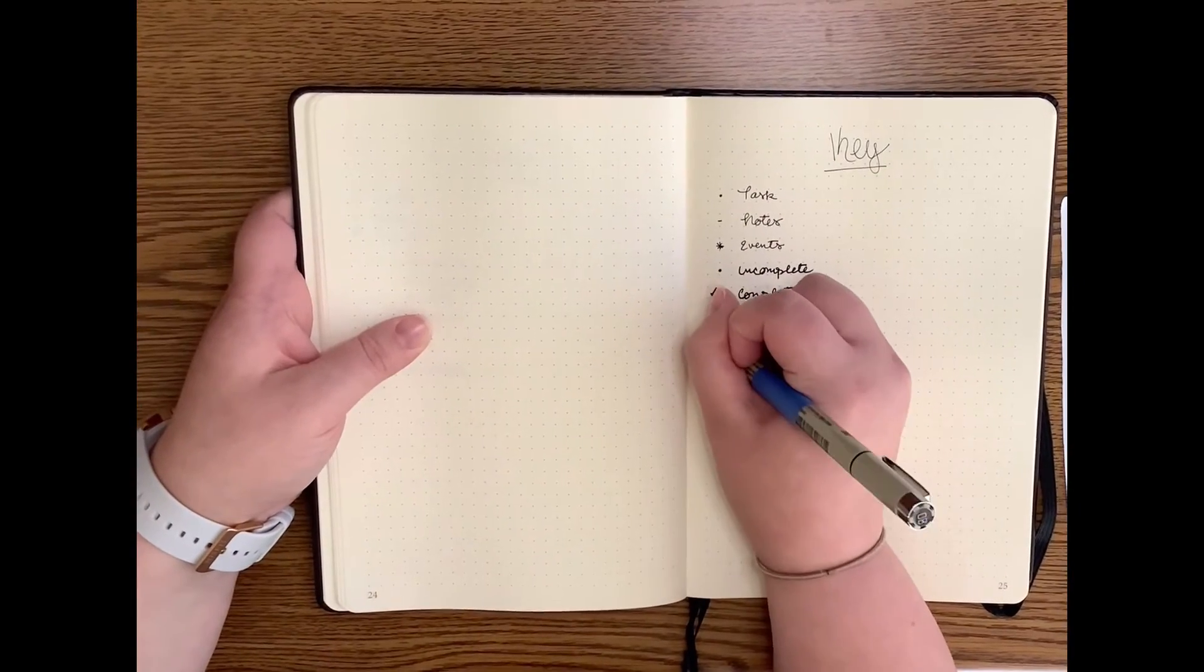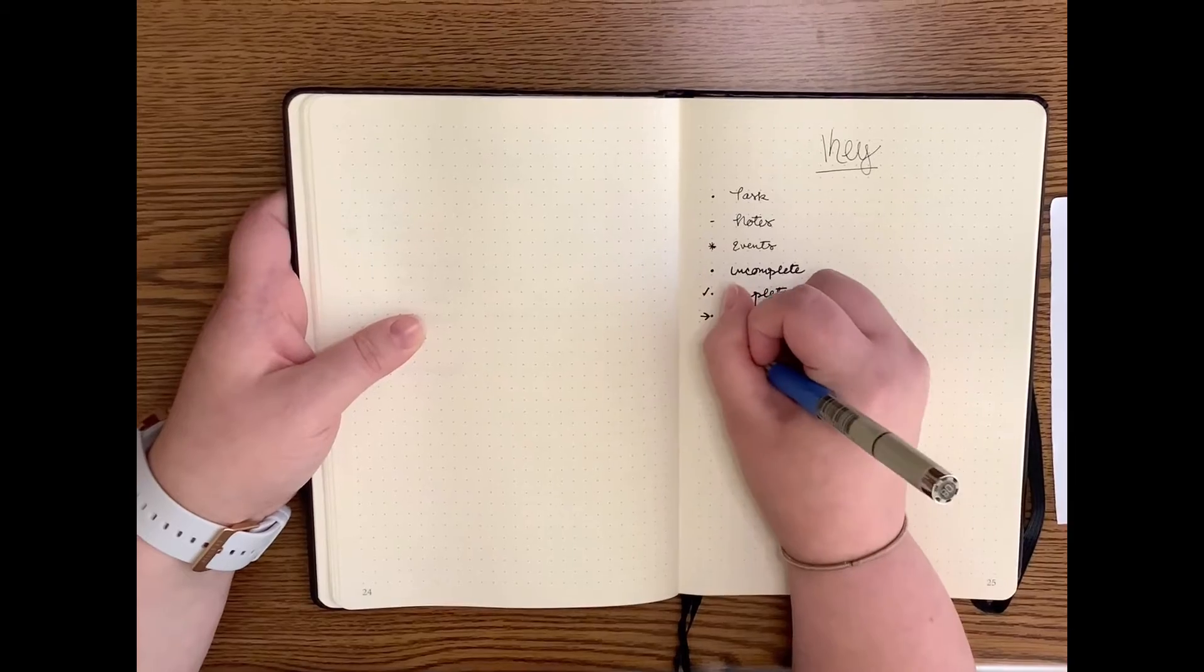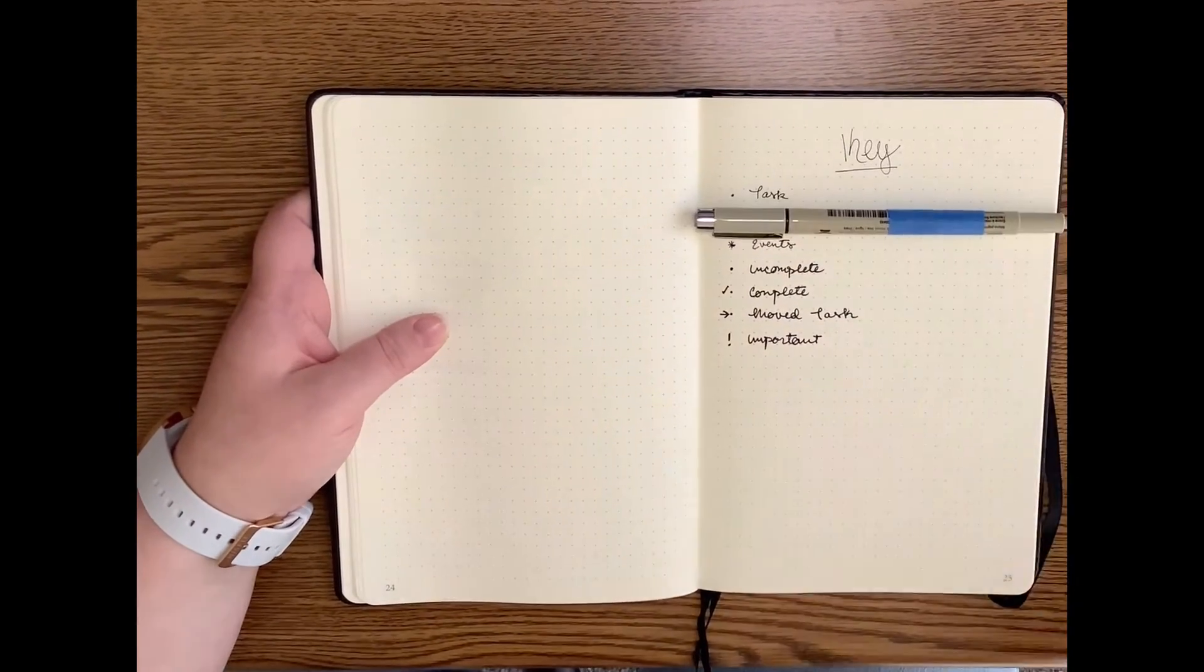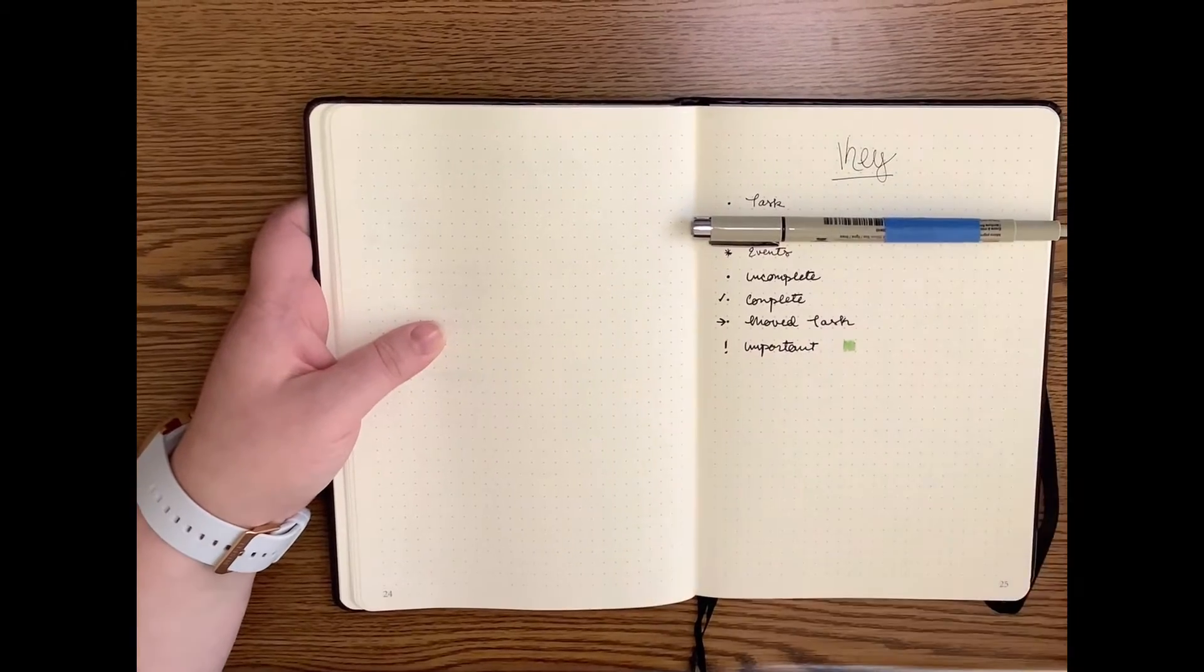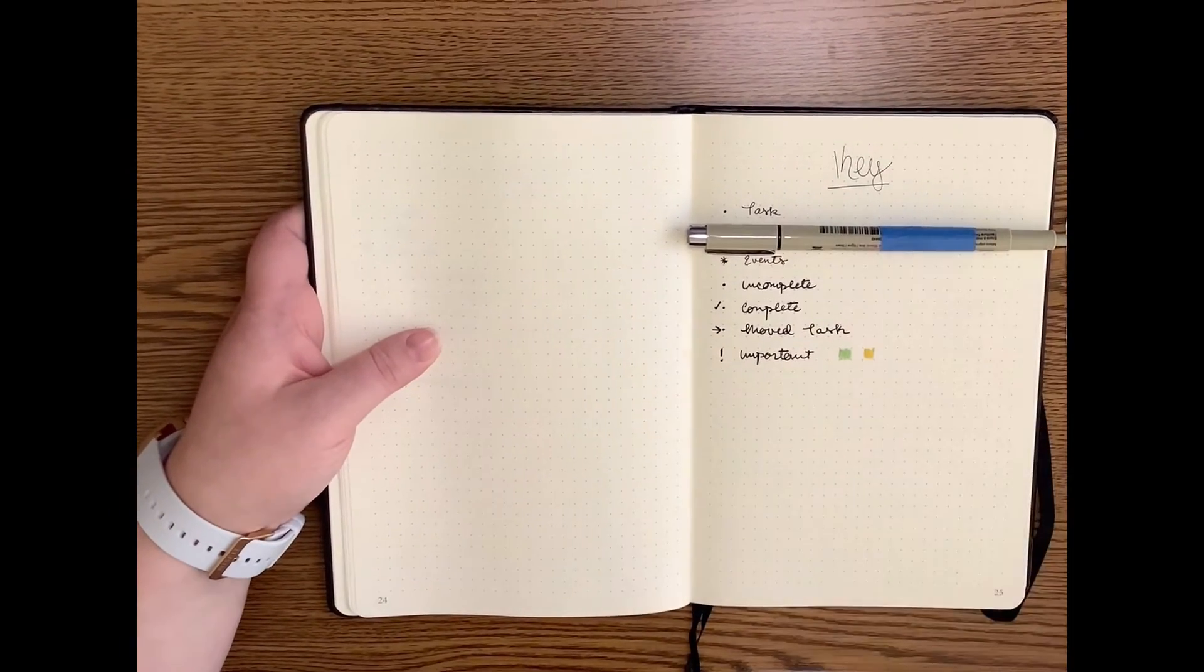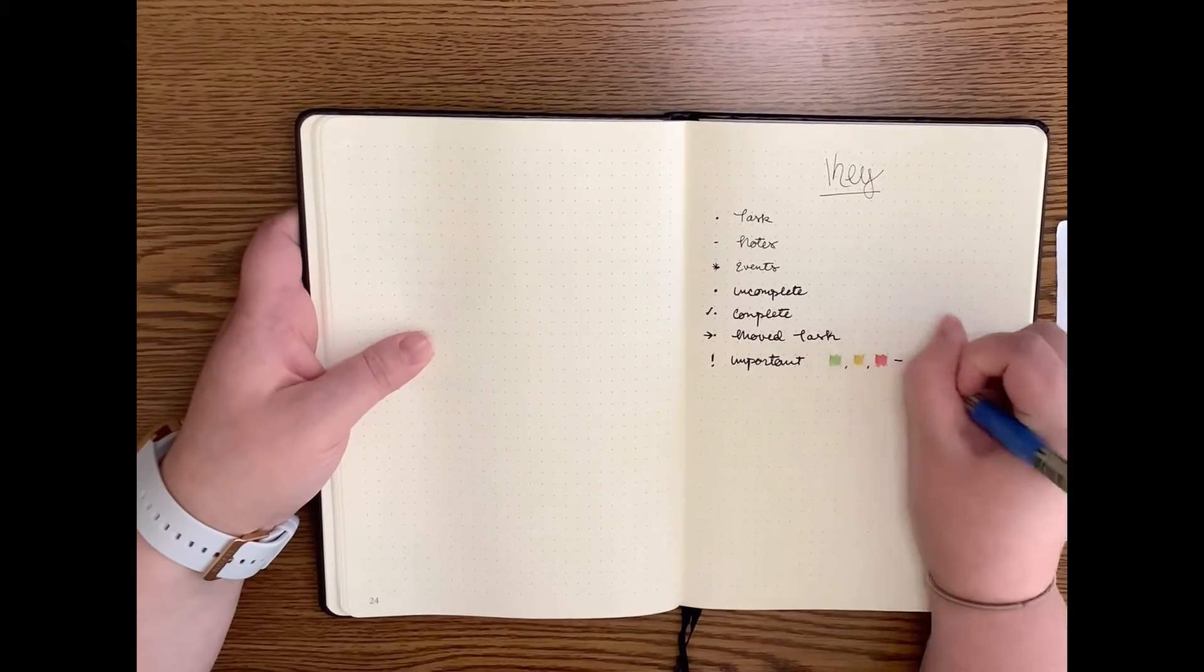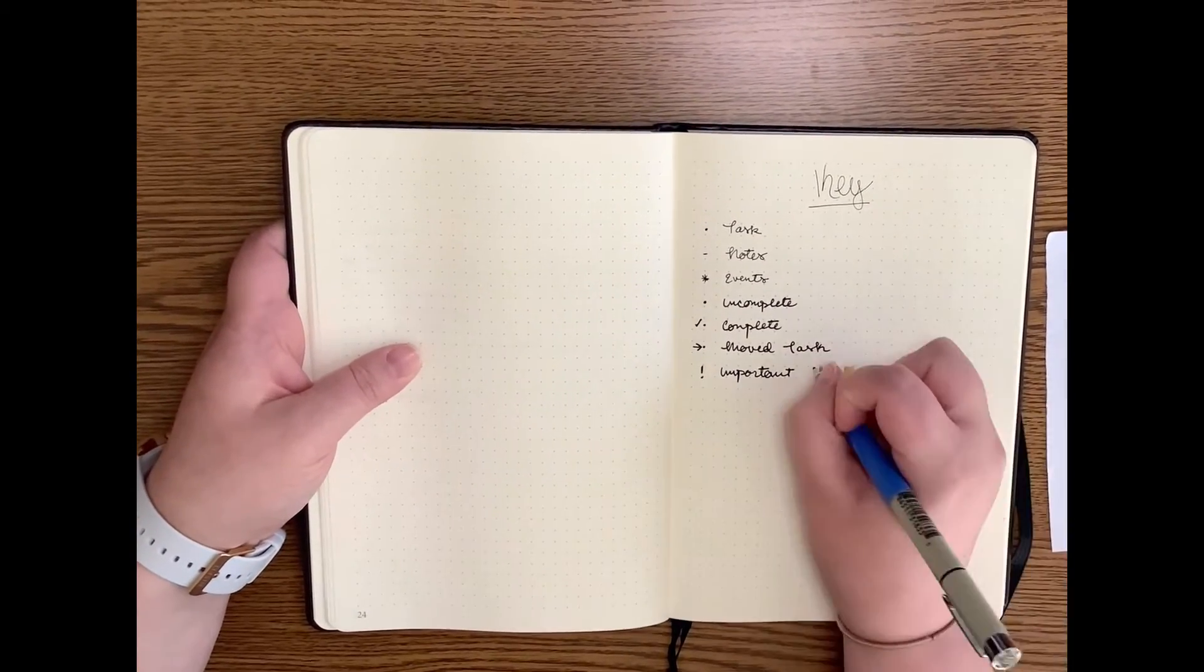There are many types of keys to create, so use one that best suits your needs and have fun with it. For example, Miss Kat likes to color coordinate her key to show a level of urgency to a particular task. Find what works best for you and remember to have fun.